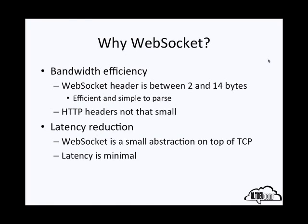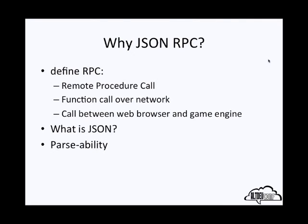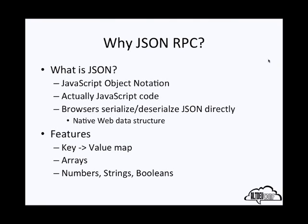I chose to use JSON for my remote procedure call methods. For those not familiar with RPC, it's best thought of as a function call over a network — in my case, between the web browser and the game engine. JSON stands for JavaScript Object Notation, and it's actually JavaScript code which browsers can serialize and deserialize directly into objects. It is the native web data structure. The features of JSON are key-value maps, arrays, and support for numbers, strings, and boolean values. It's quite expressive, and there are not many data structures you can't represent inside JSON.